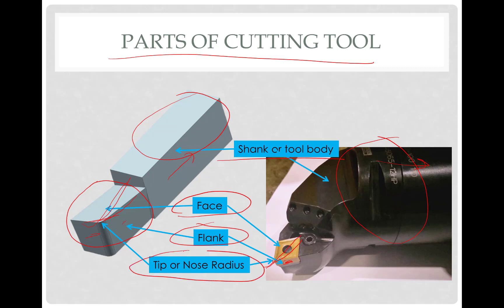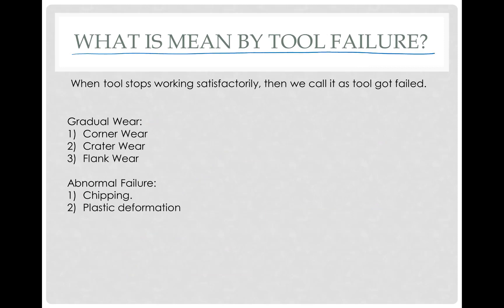The next one is the tip or the nose radius. Every single point cutting tool will have some radius at the tool tip, ranging from 0.2 to 1.2. What is meant by tool failure? When the tool stops working satisfactorily — suppose chatter marks increase, cutting power increases, or it is not producing the desired surface finish — then we say our tool has failed.